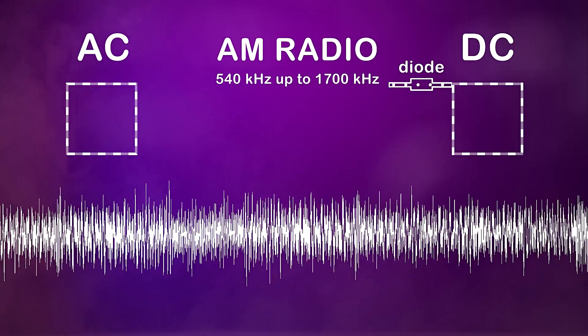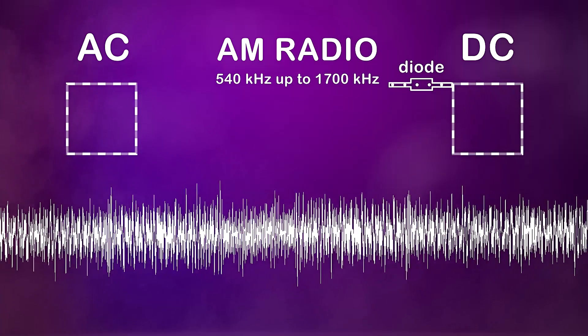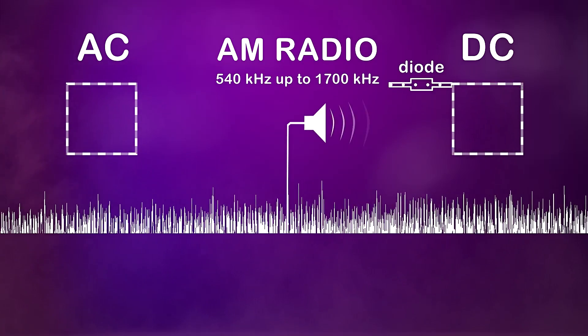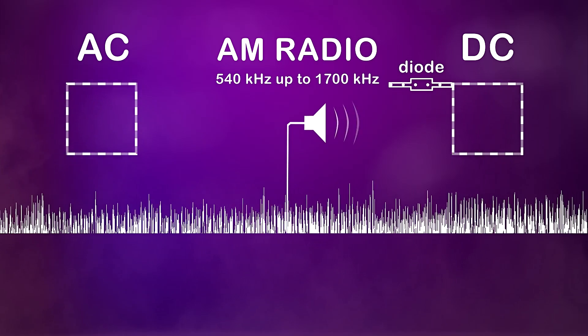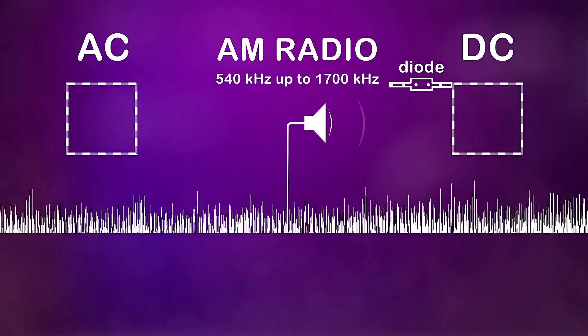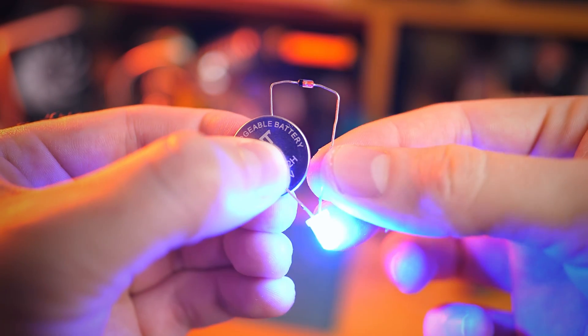But we can convert this into direct current using a diode, which only allows current to flow in one direction, which cuts that wave in half, creating electrical pulses that can vibrate a speaker. And the force that these towers broadcast that signal can be strong enough to vibrate a low voltage speaker to hear that audio without a battery.